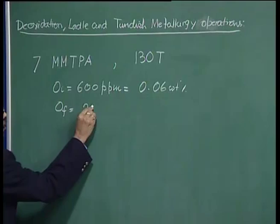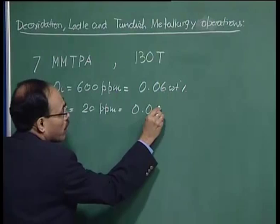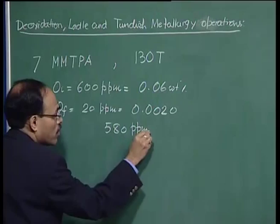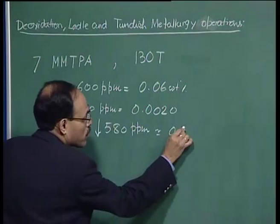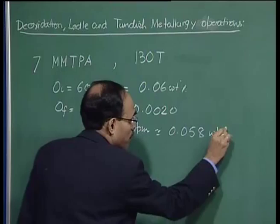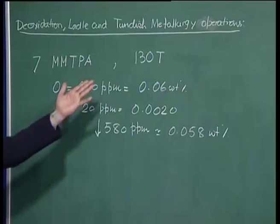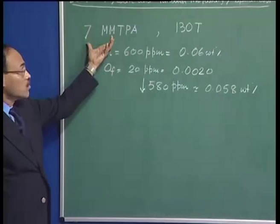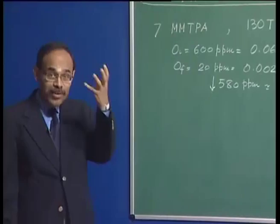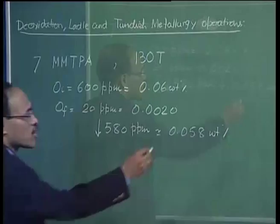That means we remove 580 ppm of oxygen, which is equivalent to about 0.058 weight percent of oxygen to be removed. With reference to a 130-ton heat, the amount is going to be really huge, and if you translate that amount in metric tons per annum in production, the total amount of oxygen removed is going to be enormous, which essentially implies that we require a lot of aluminum to deoxidize the bath.